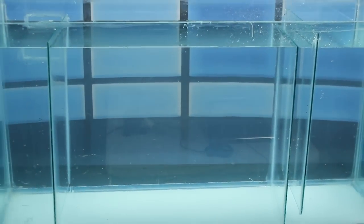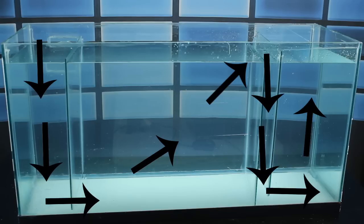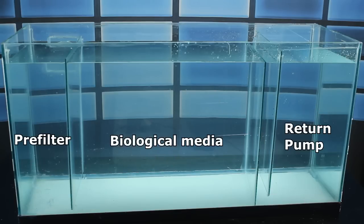The second chamber in this example will hold my biological media. Now typically in a submerged sump setting, the biological media of choice is something like ceramic media, sintered glass, lava rock, pumice stone, something with a lot of surface area.